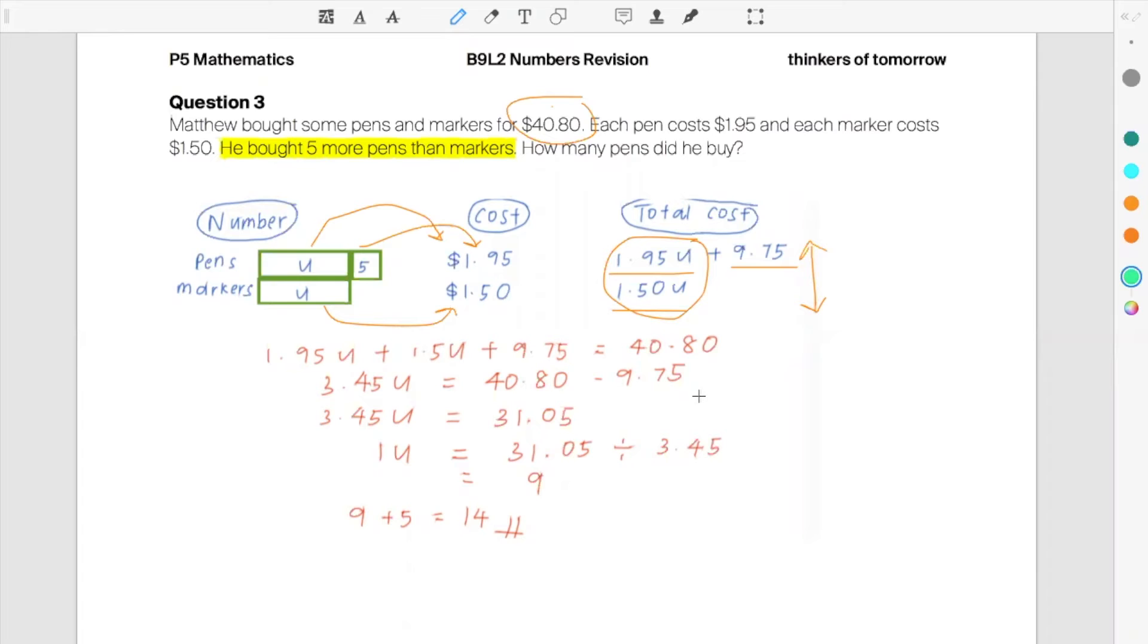3.45U will be $31.05. 1U will be $9. And after we should be very straightforward already.